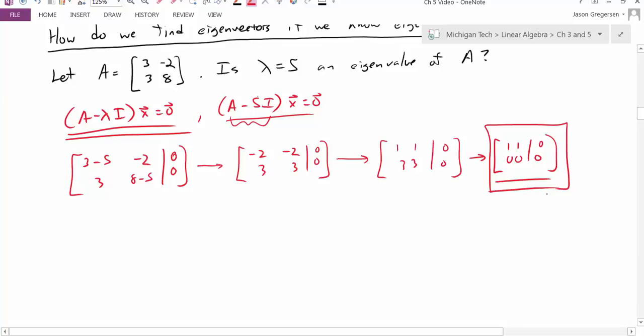So yes, lambda is an eigenvalue. If I had row reduced and found out that there was only the trivial solution, then I would know that lambda is not an eigenvalue.